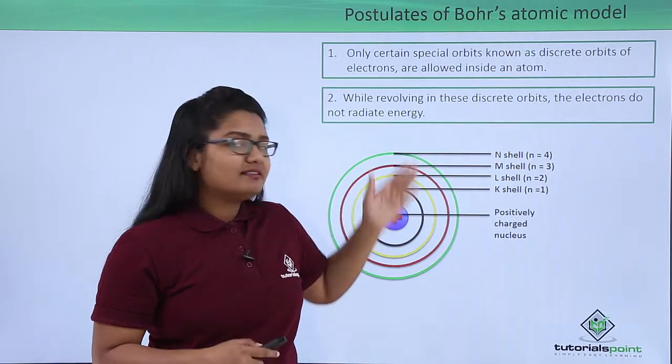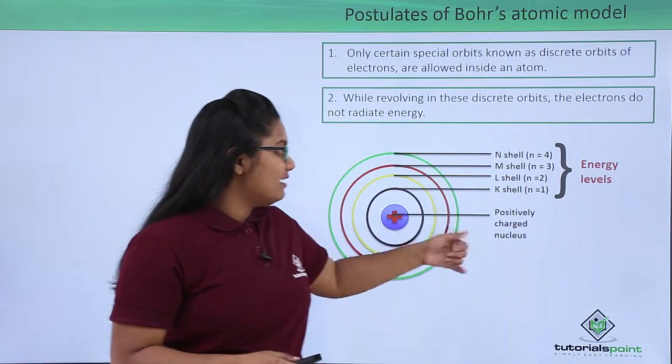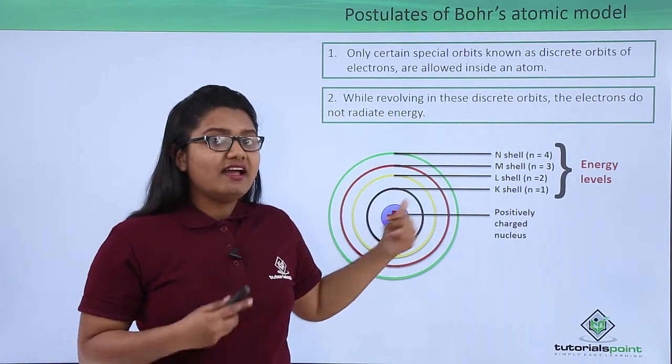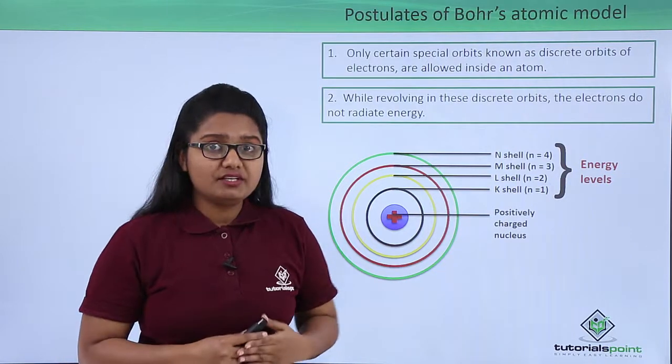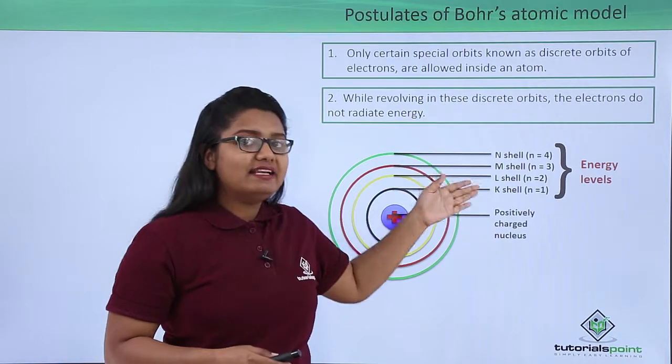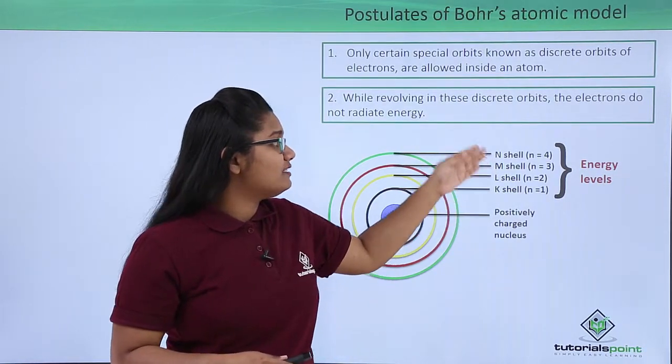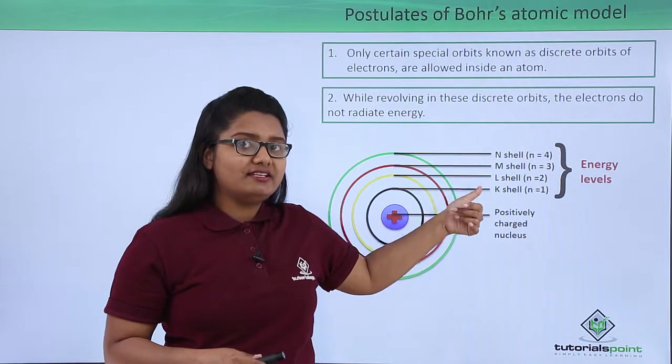Now each of these shells represents an energy level. It means that an electron in K shell has a particular amount of energy which is different from an electron in L shell. And the same applies to the rest of the shells, that is M and N shells, and so on.